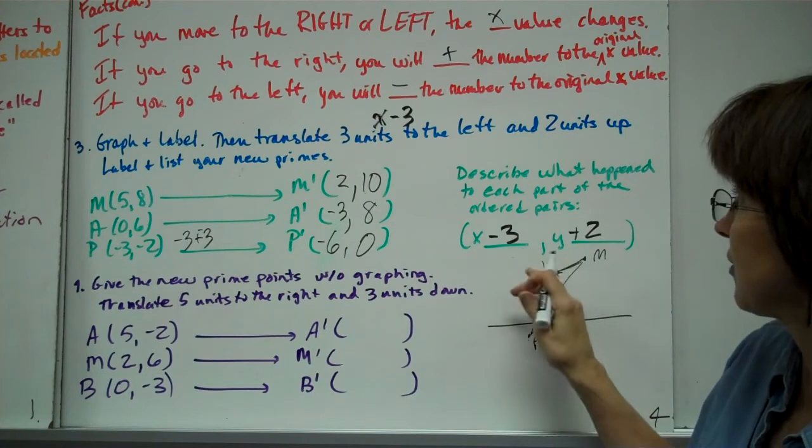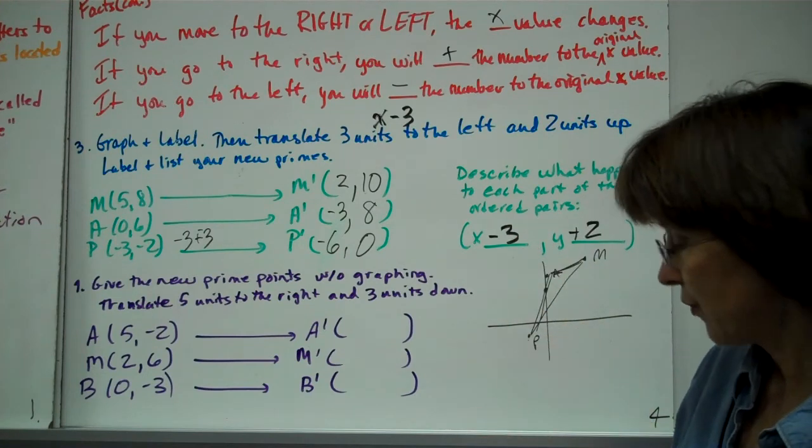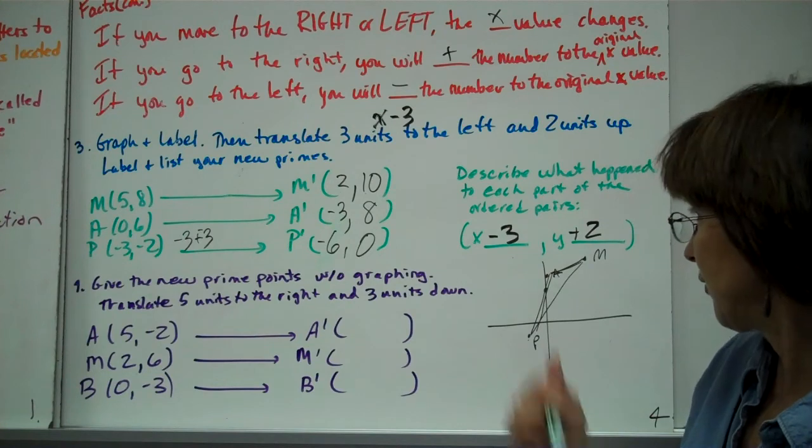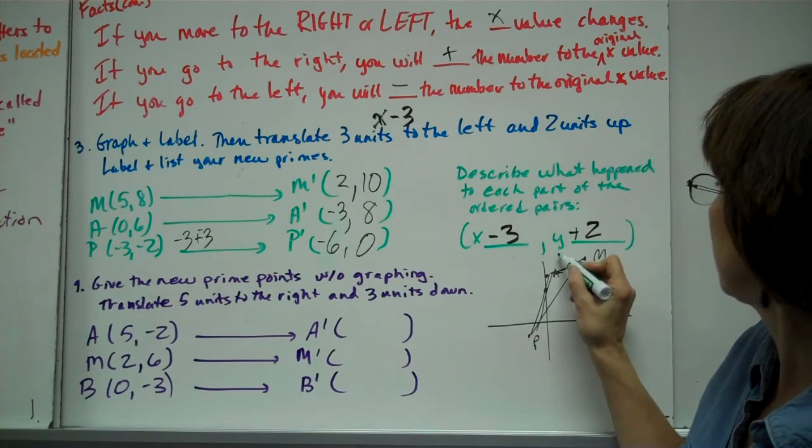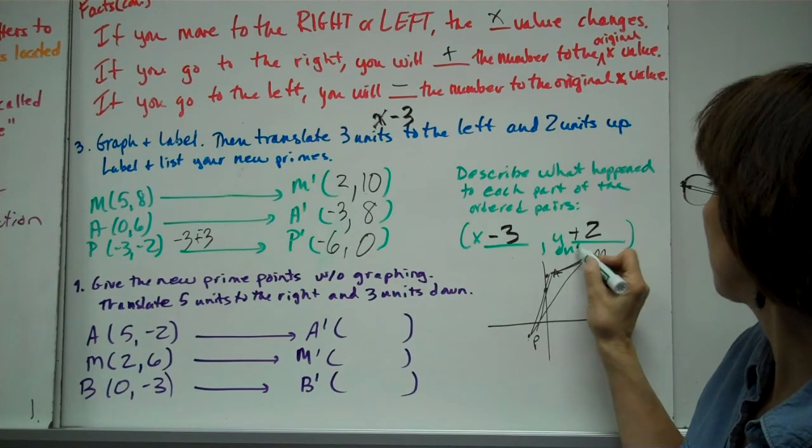Then you're basically going to move it to the left 3 and up 2. We have M prime is (2,10), so it's over 2, up 10. So it looks like that's my M prime.